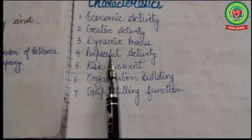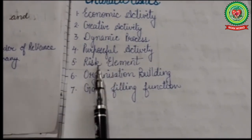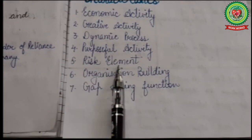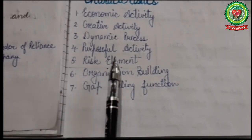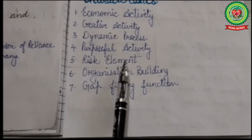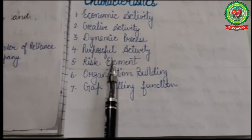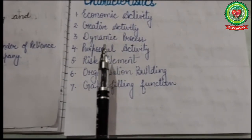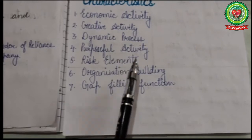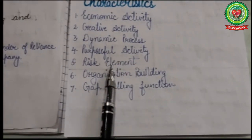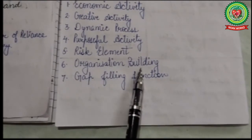Purposeful activity involves the production and distribution of economic goods and services. Fifth is the risk element — entrepreneurship makes decisions in the face of uncertainty. Risk is an inseparable element of entrepreneurship because there may be profit or there may be loss that occurs in the business.